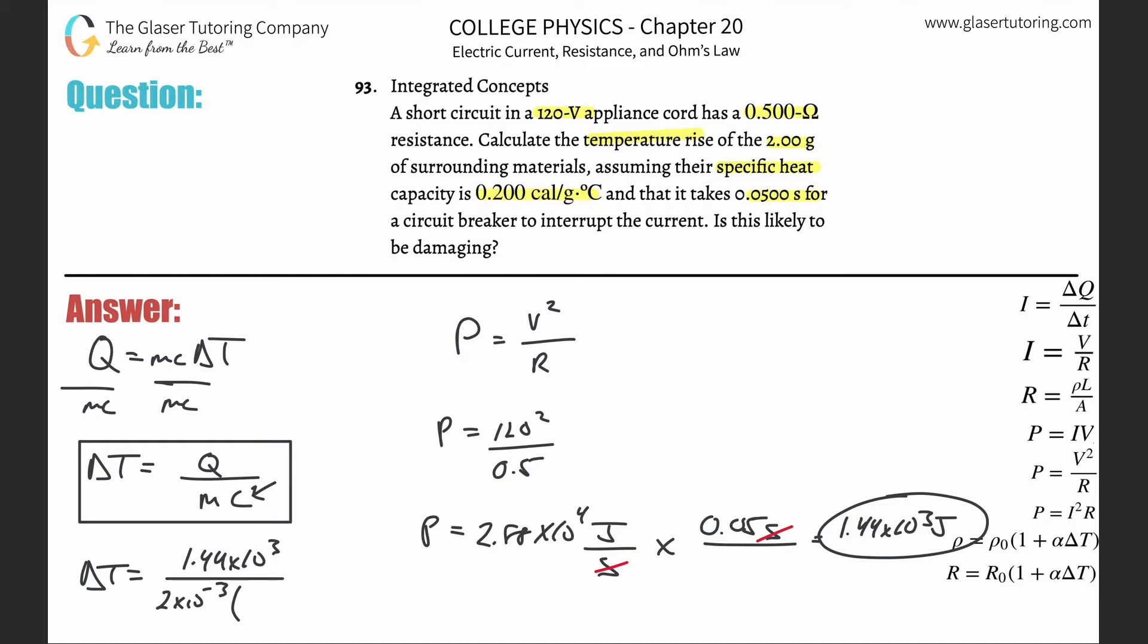Next, specific heat. They gave us the value but in calories instead of joules and grams instead of kilograms. So 0.2 calories per gram degree Celsius. We've got to convert that into joules per kilogram degree Celsius because we need those standard units. 0.2 calories per gram degree Celsius. Calories on the bottom, joules on the top: 4.184 joules for every single calorie. Sorry about that background noise, just the garbage man.